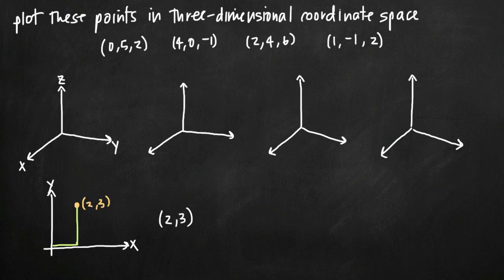This is going to be the same concept for three-dimensional coordinate space, except that we have to deal with a third dimension or a third variable, which is z. And z is really just adding a third dimension — a height component — to this flat x, y coordinate plane.